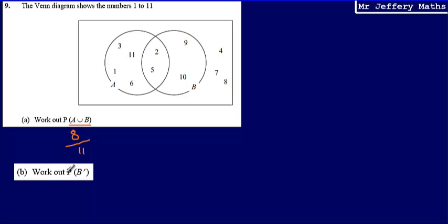Part B, we're asked to work out the probability of the complement of B. We can also think of this as being the probability of not B. So the probability that it's not B, well, this is anything that is not contained within this part of my Venn diagram.